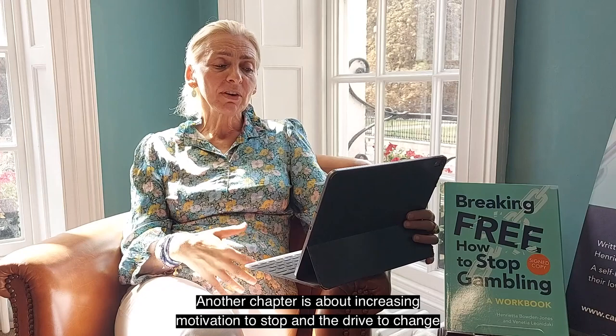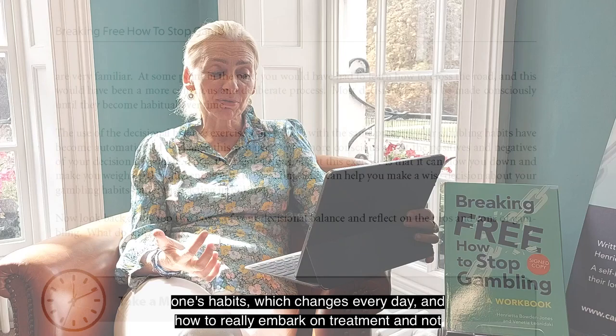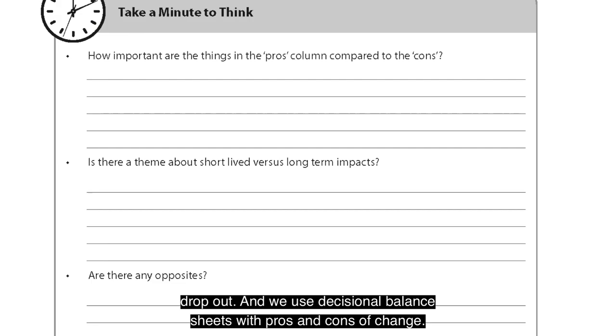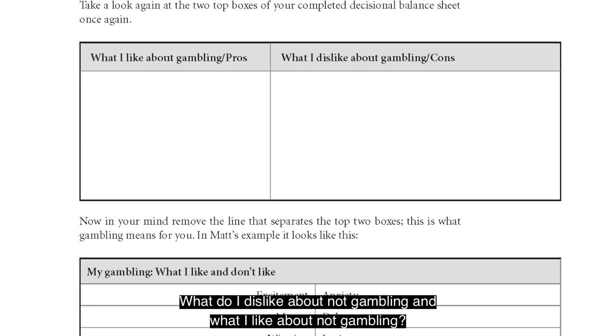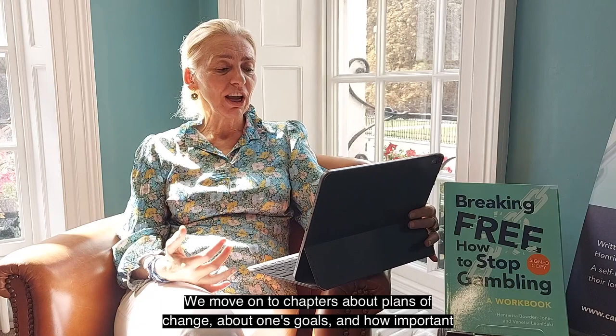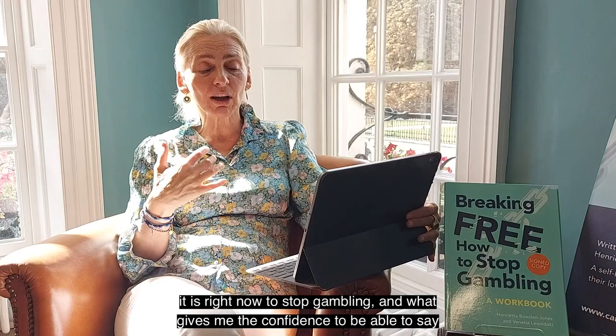Another chapter is about increasing motivation to stop and the drive to change one's habits, and how to really embark on treatment and not drop out. We use decisional balance sheets with pros and cons of change: what do I like about gambling, what do I dislike about gambling, what do I dislike about not gambling, and what do I like about not gambling? We then move on to chapters about plans of change, goals, and how important it is right now to stop gambling.